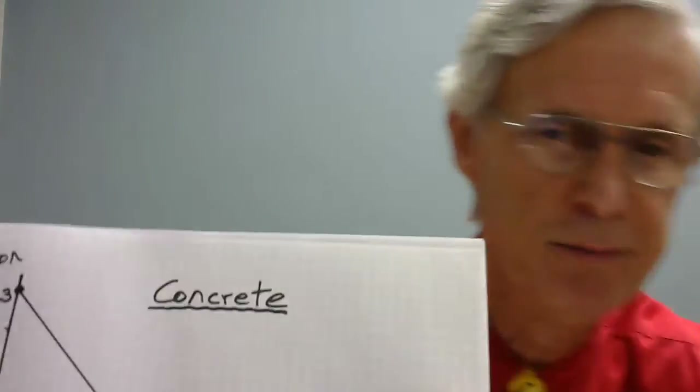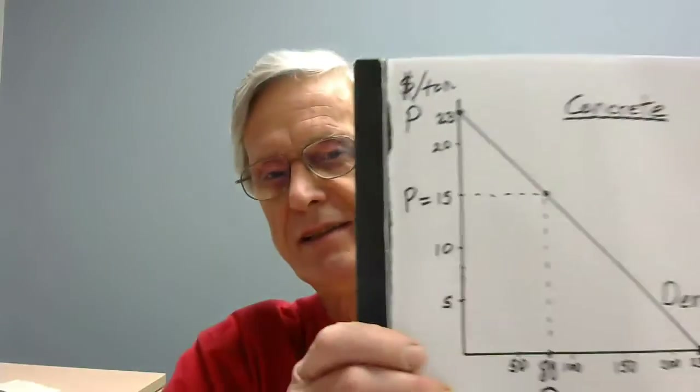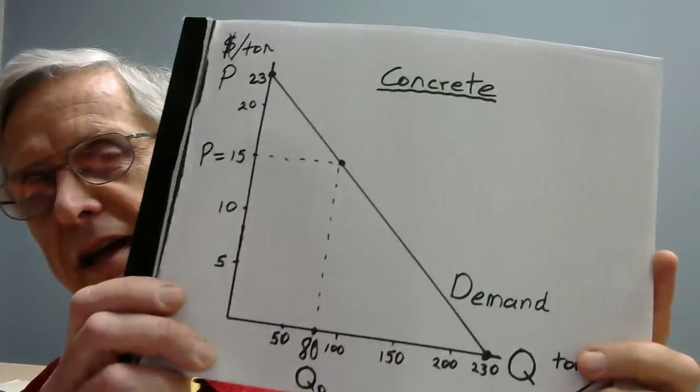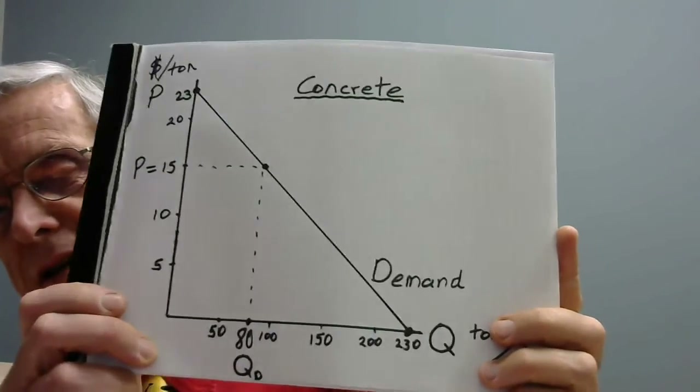Basically what this video is about is practicing to be a professional — understanding what you're working with and not just trying to memorize something you don't understand. We're going to start here by looking at a demand line. It doesn't sound very complicated, but there are all kinds of ways you can get tripped up if you don't know what you're talking about. For example, demand means something different than quantity demanded.